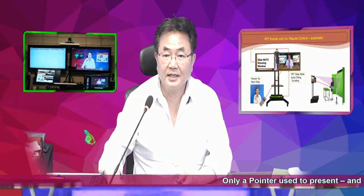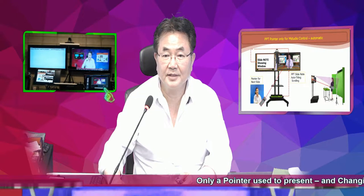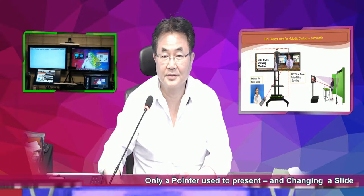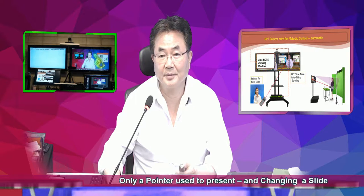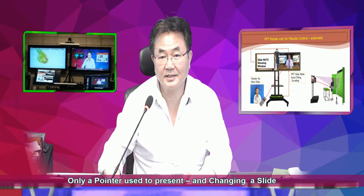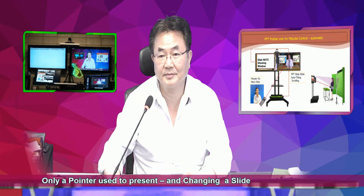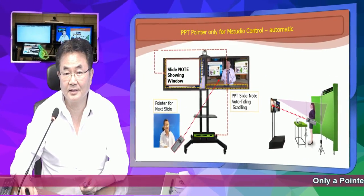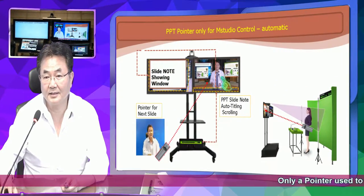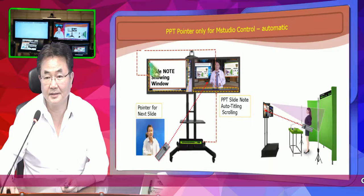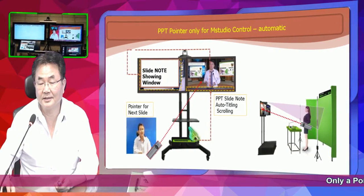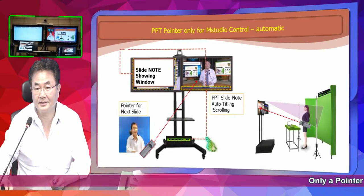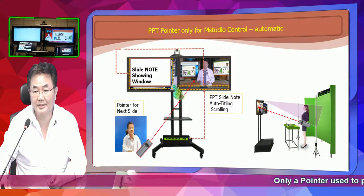Right now as you can see, we have a screen with the render output. You can watch the cameras here. Here is a prompter — same idea. We have this screen, this view, and this one here. And this is the MStudio output with a camera and chroma key.